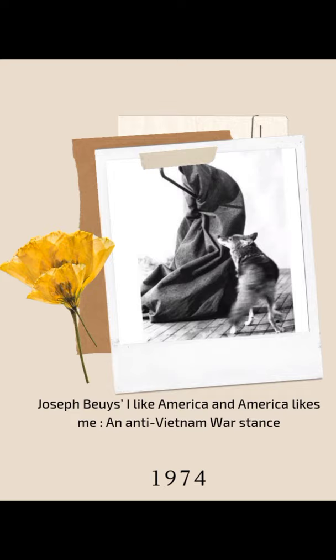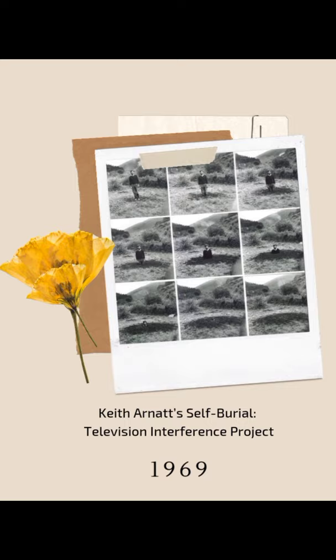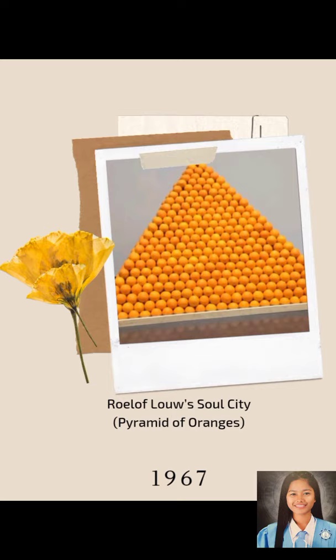Another example is Janice Cown Less's Untitled work, Found Objects in 1969. Another is Kate Arnott's South Burial Television Interference Projects in 1969. In 1972, Gilbert and George are portrayed as the artists as young men in film and video. Another is Role Luce's Soul City, Pyramid of Oranges in 1967.